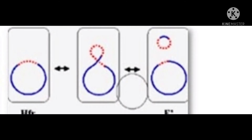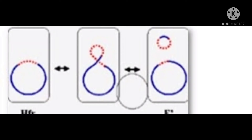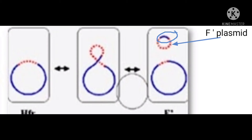But in some cases, this integrated F plasmid leaves from the main bacterial DNA, and while excising and leaving from the main bacterial DNA, it may make some error and carry a small portion of the main bacterial DNA along with the F plasmid. So this plasmid now carries a small portion of the main bacterial DNA, and they are considered as F' plasmid and the cell is known as F' cell.